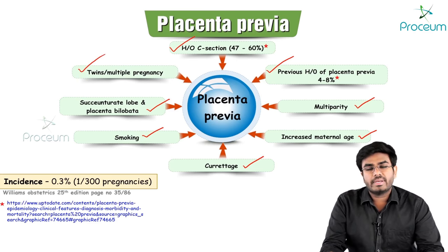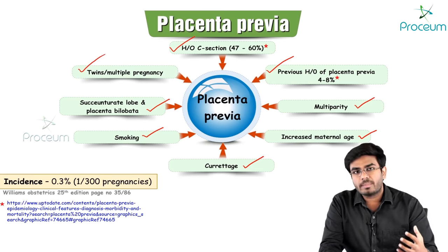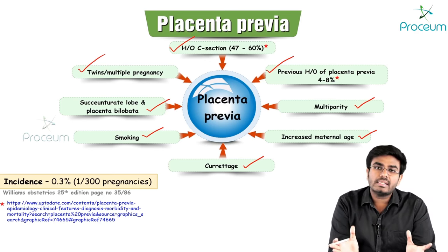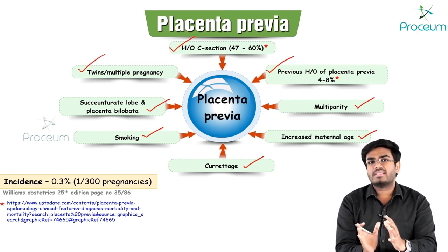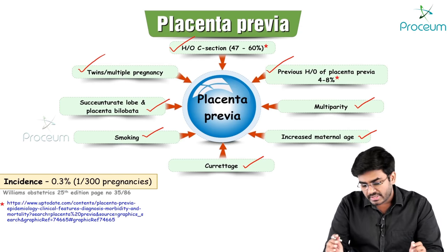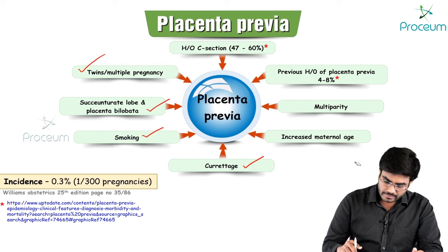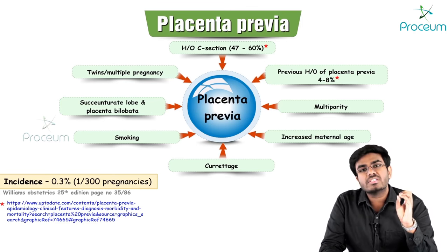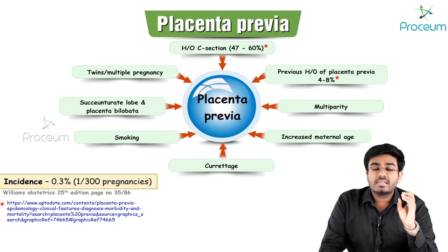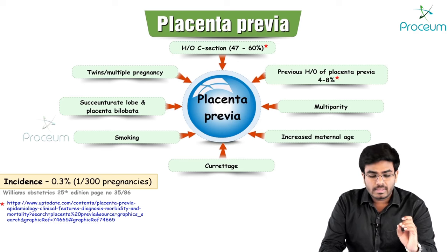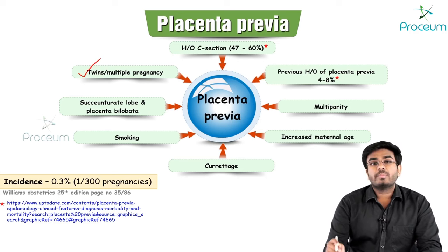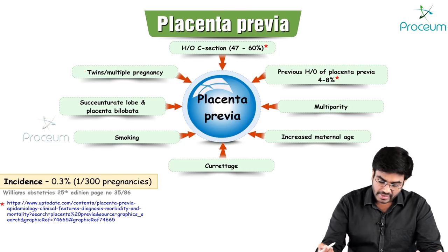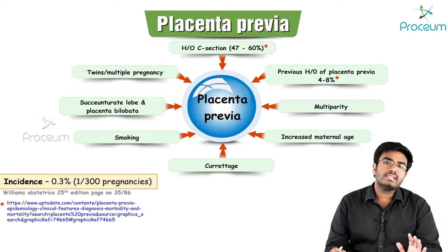Twin or multiple pregnancy is also a risk factor because the placenta is larger, increasing the chance that part of it descends to the lower uterine segment. To summarize the key risk factors: previous C-section, previous placenta previa, succenturiate placenta, placenta bilobata, and multiple pregnancy. Smoking, curettage, increased maternal age, and multiparity are also considered risk factors.